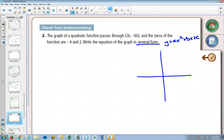The general form, which is ax squared plus bx plus c. The standard form, which is y equals a(x minus p) squared plus q. The standard form is the vertex form. And we've learned the factored form.